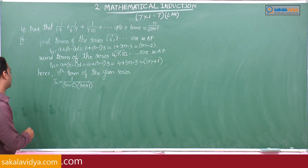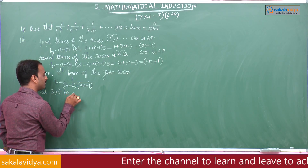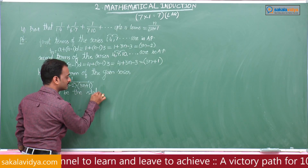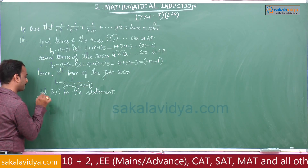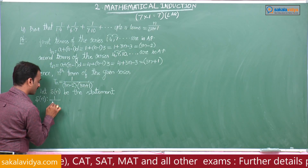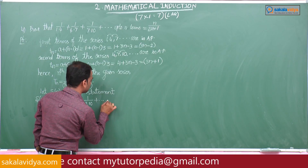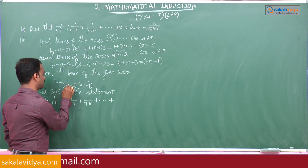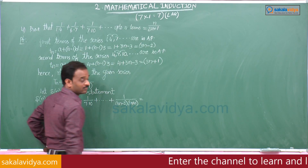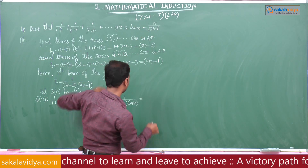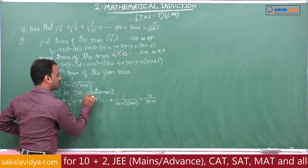Now the nth term of the given series is 1/(3n-2)×(3n+1). Let S(n) be the given statement: S(n): 1/(1×4) + 1/(4×7) + 1/(7×10) + ... + 1/((3n-2)(3n+1)) = n/(3n+1).